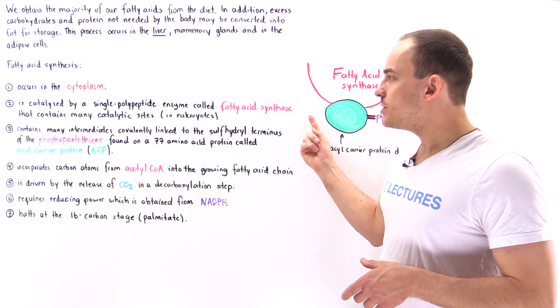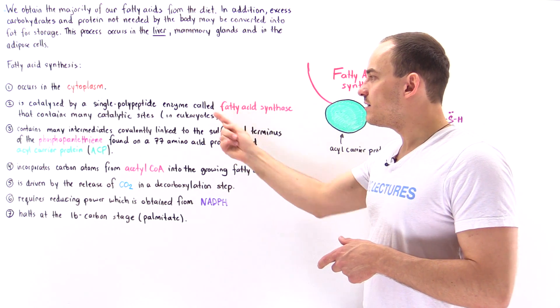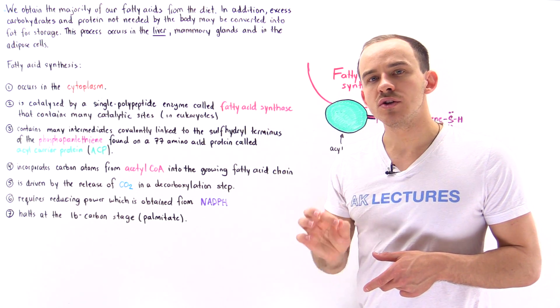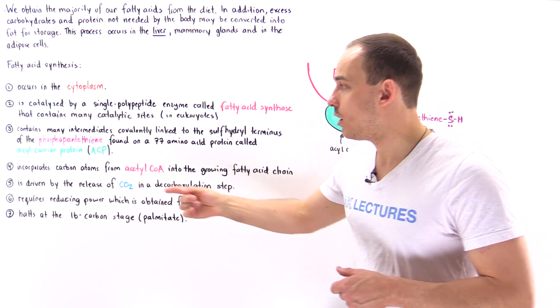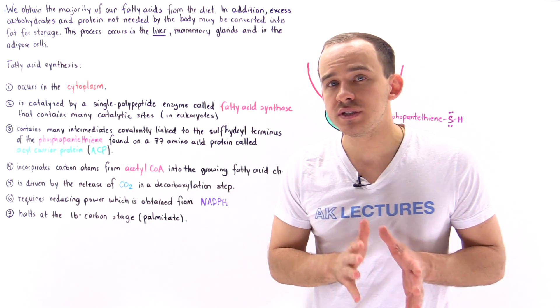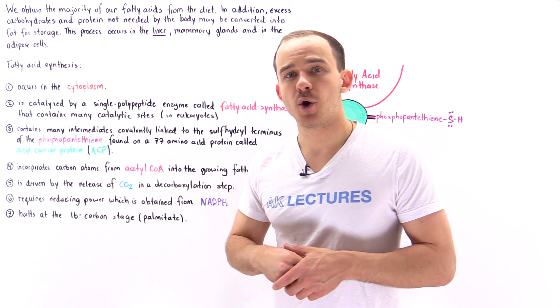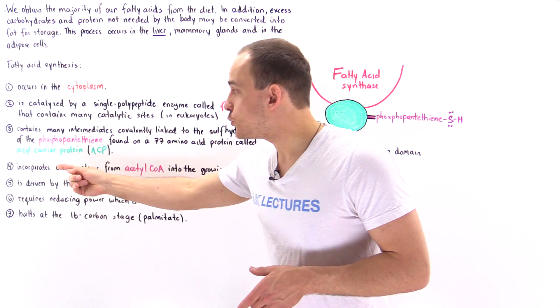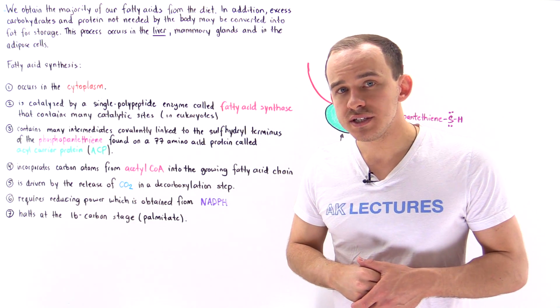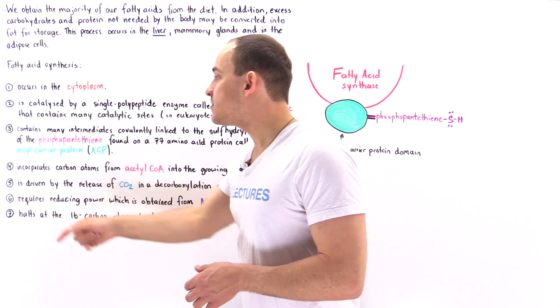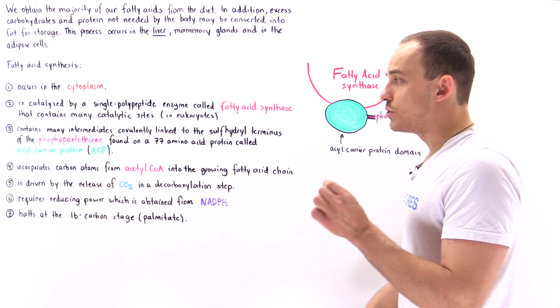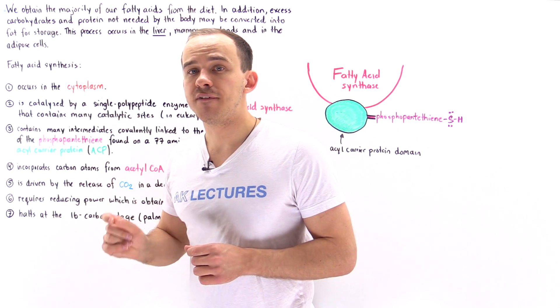Now in addition to these seven catalytic sites on the fatty acid synthase, we also have a domain we call the acyl carrier protein domain or ACP domain. And attached onto this acyl carrier protein is a phosphopantethine molecule, which is a vitamin B5 derivative.